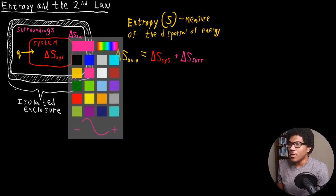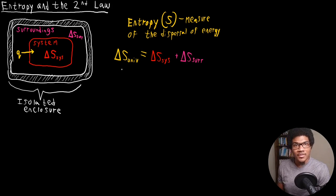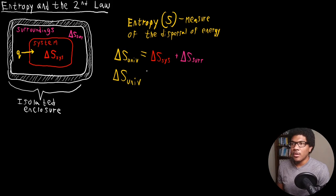So, what is the second law of thermodynamics? The second law of thermodynamics tells us that there's always going to be a net increase in the delta S of the universe. Delta S universe will always be greater than zero. This is the second law of thermodynamics.